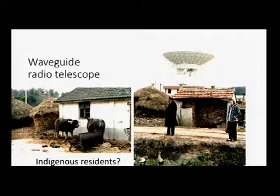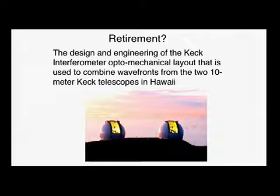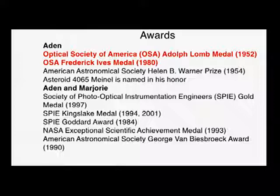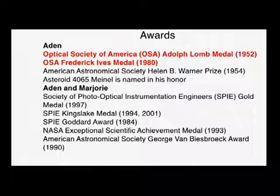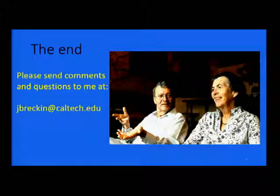In retirement, they did the design and engineering of the Keck Interferometer optomechanical layout used today to combine the wavefronts of the two 10-meter Keck telescopes in Hawaii. Among Aidan's awards: the Optical Society of America Adolph Lomb Medal and the Frederick Ives Medal — he may be the only person other than Edwin Land to have won both. He also won the Helen Warner Prize, had asteroids named after him, won the SPIE Gold Medal, and won the Kingslake Medal twice — given for the most clearly authored paper. He also won the NASA Exceptional Scientific Achievement Medal and in 1990 the American Astronomical Society George Van Biesbroeck Award.